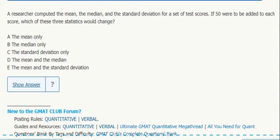So we already have the mean, median, and standard deviation. Okay, so if you add 50 to each score, what would change?